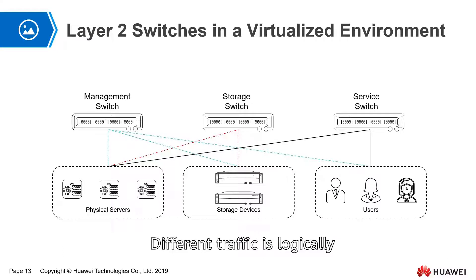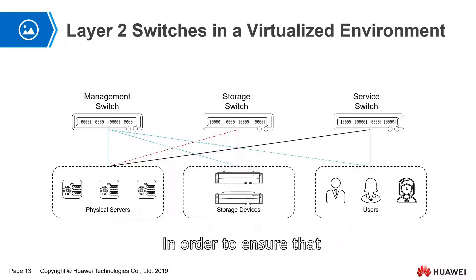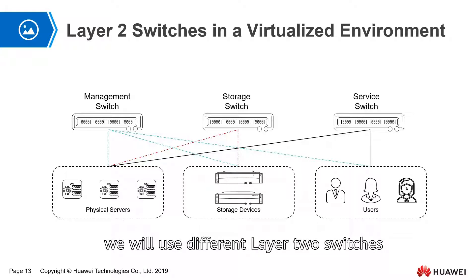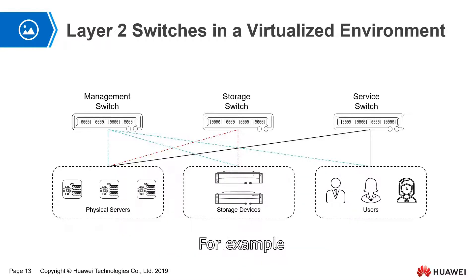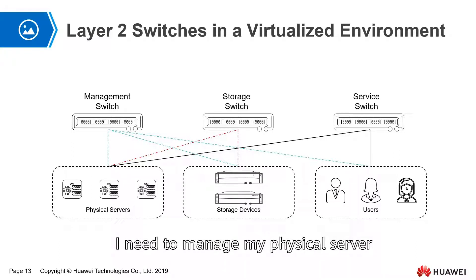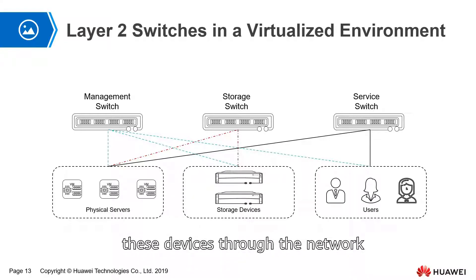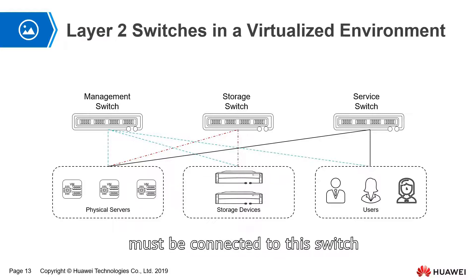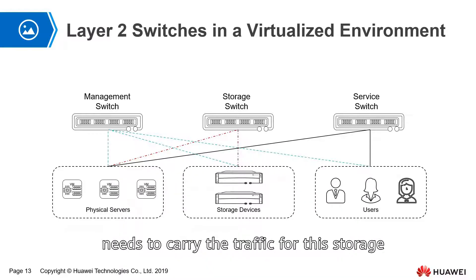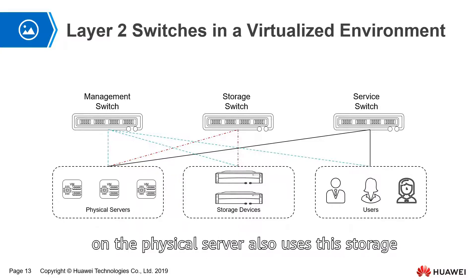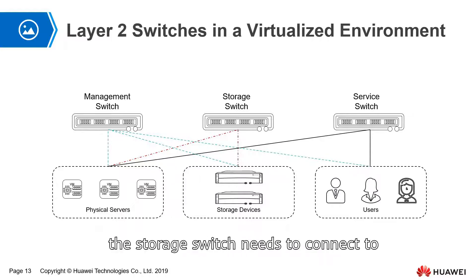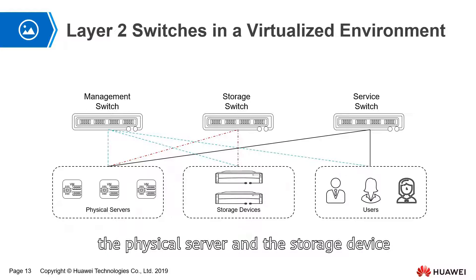Different traffic is logically distinguished by VLAN. However, physically it uses only one channel, and the bandwidth of this channel is limited. In order to ensure that each traffic has sufficient bandwidth, we use different layer 2 switches to carry different traffic. For example, for management traffic, we need to manage physical servers and storage devices, so the management switch connects to all physical servers, storage devices, and users. The storage switch carries storage traffic, connecting to physical servers and storage devices. Similarly for the service switch — since virtual machines all run on physical servers, the service switch connects to the physical server and to users.